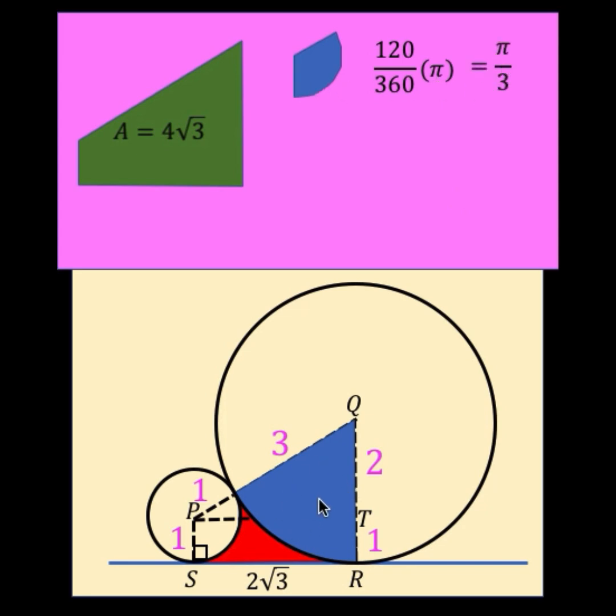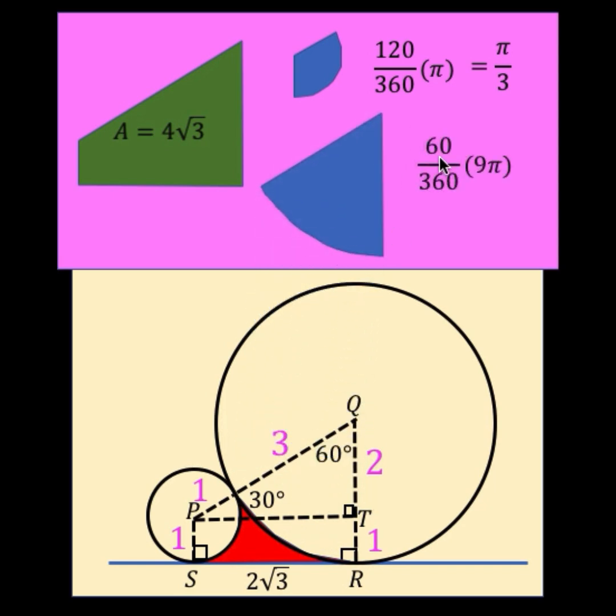Now let's get the area of this bigger sector. The angle here is 60 degrees, so 60 out of 360 times the area of the bigger circle. So pi r squared is the formula, where r is 3. So 3 squared is 9 times pi, or 9 pi. Simplifying, we arrive at 3 pi over 2 for the area of this bigger sector.